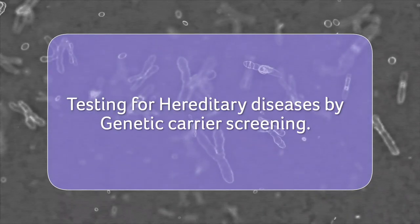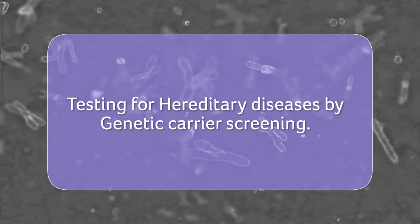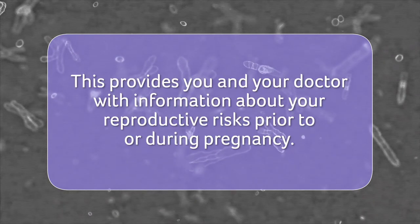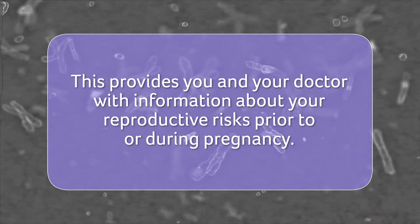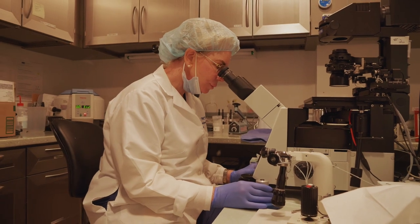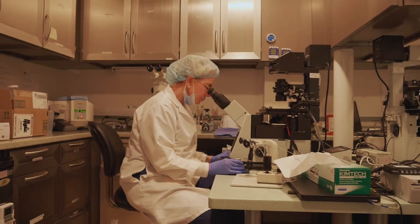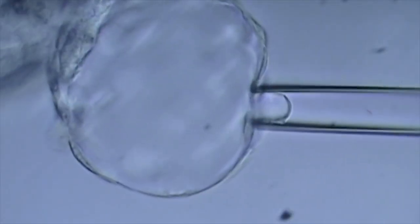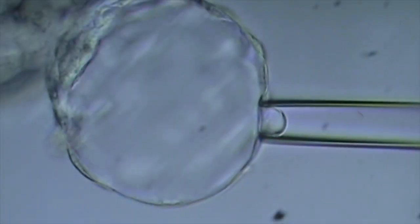The next part of the medical evaluation involves testing for hereditary diseases by genetic carrier screening. This provides you and your doctor with information about your reproductive risks prior to or during pregnancy. While most babies are born healthy, with each pregnancy there is a small chance of having a baby with a severe hereditary disease. Genetic carrier screening helps determine what this chance is for you. This testing is highly recommended, especially if you are using an anonymous egg or sperm donor.